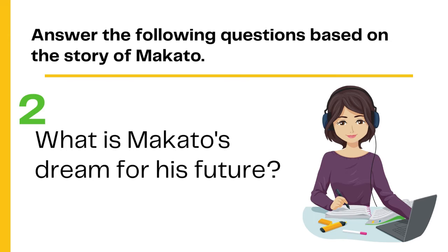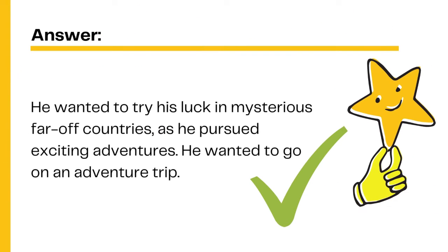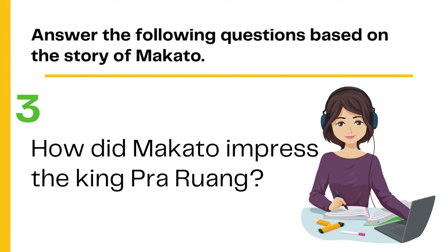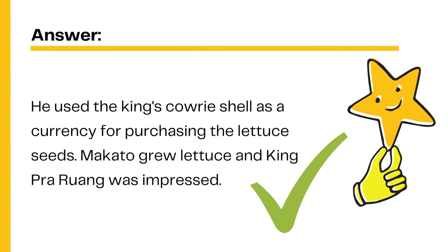Number 2: What is Makato's dream for his future? Very good! He wanted to try his luck in mysterious far-off countries as he pursued exciting adventures — he wanted to go on an adventure trip. Number 3: How did Makato impress King Praruang? You're right! He used the King's Kauri shell as currency for purchasing lettuce seeds. Makato grew lettuce and King Praruang was impressed.